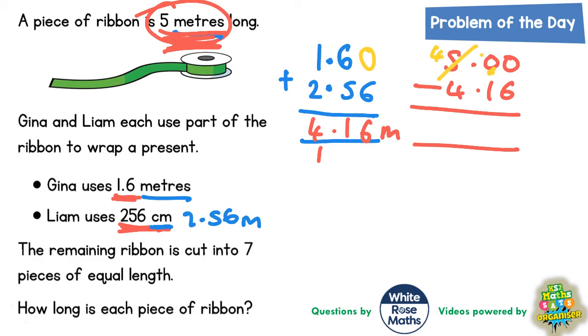The 5 becomes a 4 and this 0 becomes 10. Now we need to borrow from this 10. The 10 becomes 9 and when we've borrowed makes the end 0 into 10. 10 take away 6 is 4, 9 take away 1 is 8, 4 take away 4 is nothing. So 0.84 metres of ribbon left.